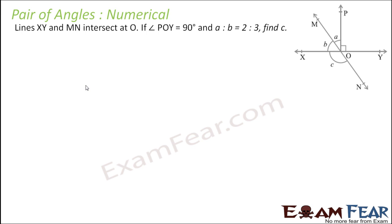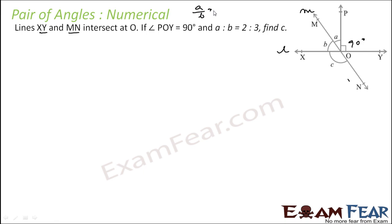The question says that line XY — mark it as L — and line MN, which is the main line, mark it as small M. They intersect at point O. Angle POY is 90 degrees, and angle A to angle B is 2:3. So I can say A is equal to 2x and B is equal to 3x, just for solving purposes.